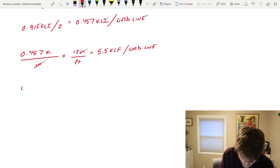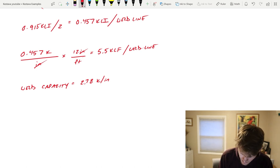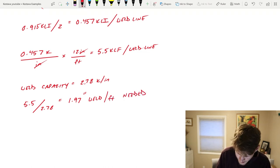That's per foot length, that's the demand. Back at the top we know we had a weld capacity already solved for us equal to 2.78 kips per inch of weld. So if we divide that demand per foot divided by the capacity of inch of weld, that will get us 1.97 inches of weld per foot needed. To me I would just round up and say we need 2 inches of weld every 12 inches.